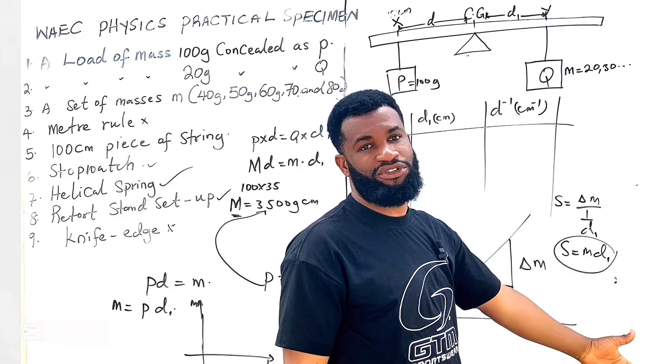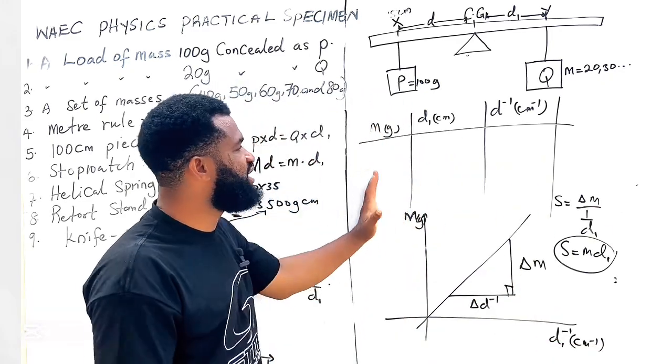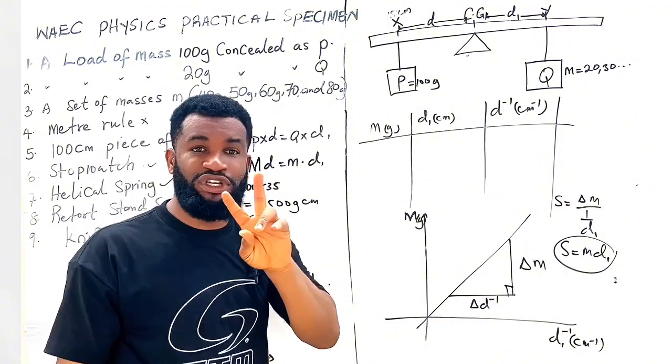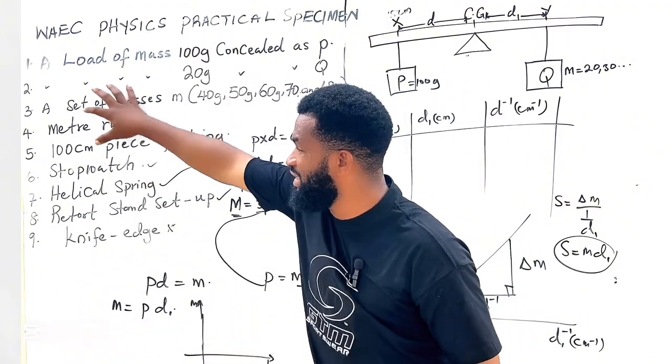So before you even start plotting your graph, WAEC knows what your graph would likely be like. So this is my analysis for this experiment. I'm going to explain the third experiment that may likely come out from this same apparatus or specimen WAEC has given you.